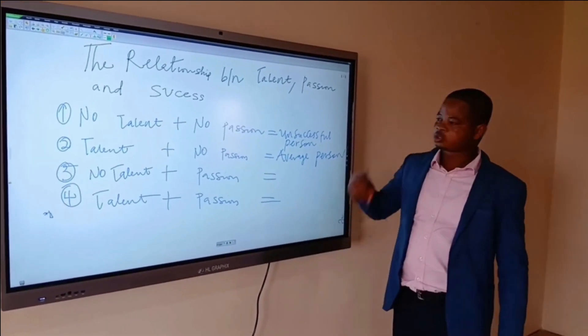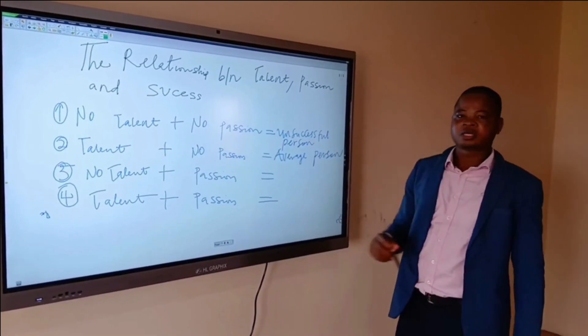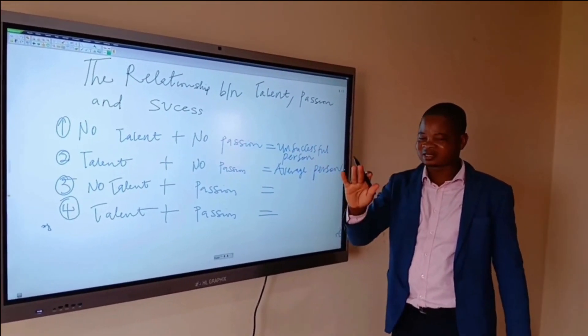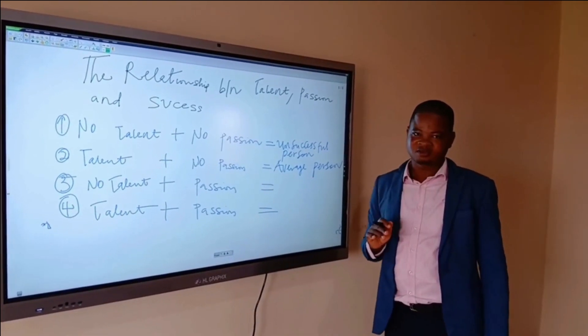Then, we go to the next person. The next category. The next category, which is the third one. Is the person who does not have talent but has passion for what he is doing.